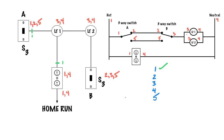Then I look for two. I've got a two at switch A and a two at switch B. I don't have a two at the lights or the receptacle. So I've got to take a two from switch A all the way to switch B — two, two, through there, two — and I give it the check mark. That's taken care of.